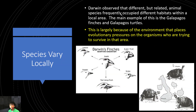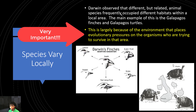Now let's talk about the fact that species vary locally. Darwin observed that different but also related animal species frequently occupy different habitats within a local area. The main example of this is the Galapagos finches and the Galapagos turtles. This is largely because of the environment that places evolutionary pressures on the organisms who are trying to survive in that area.